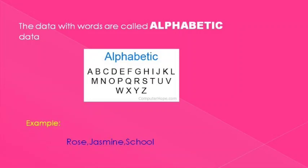So the data with only alphabets is called alphabetic data. Now students, give an example for alphabetic data. Your name is also an alphabetic data type.